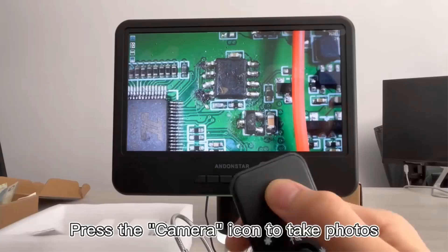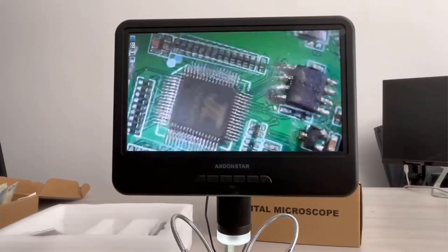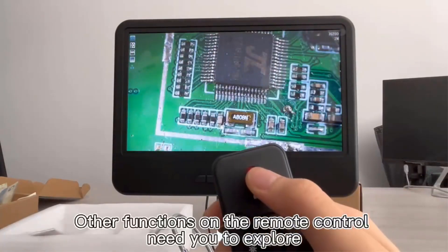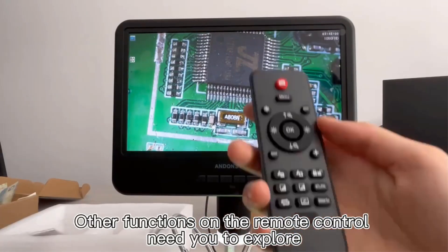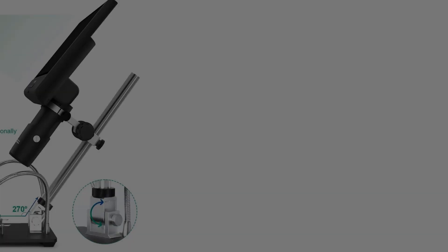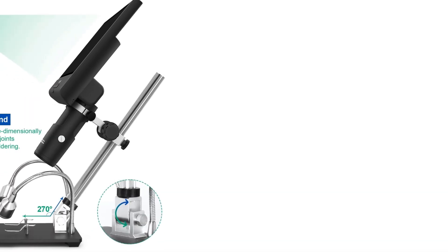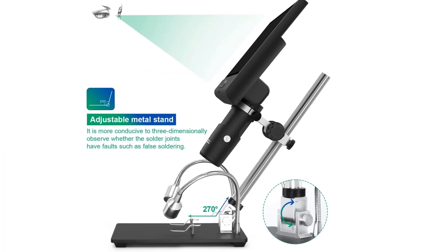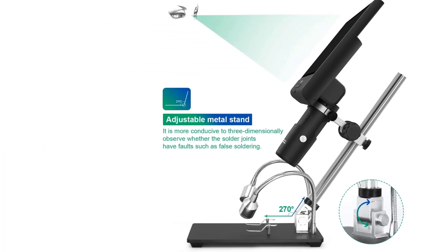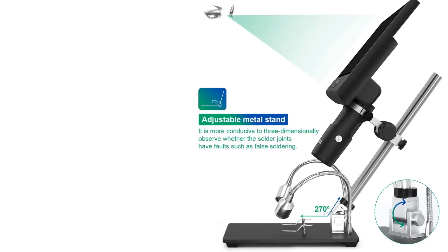The microscope's adjustable metal stand provides enhanced flexibility for multi-angle observation, while integrated LED lights ensure clearer images. The device allows for recording and image capture via a memory card, up to 128g (not included), supporting a wide variety of applications including antique identification, textile inspections, and plant observation.